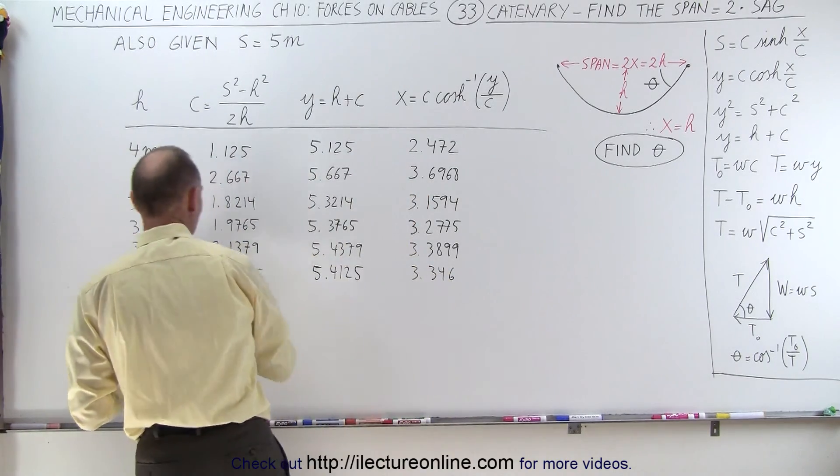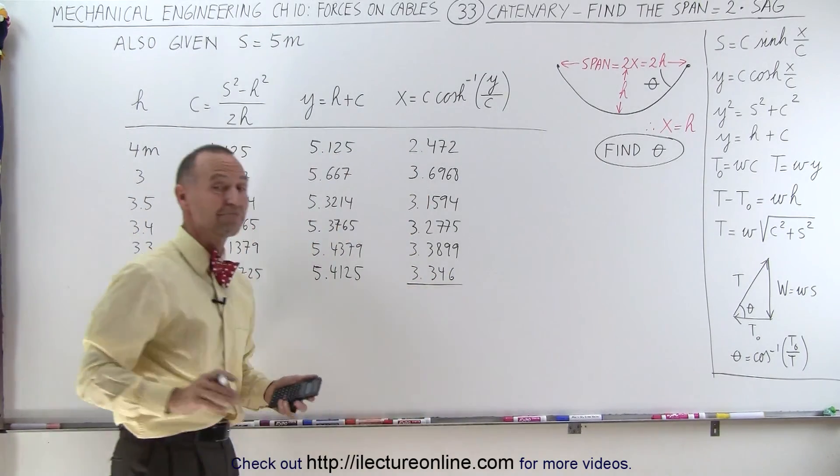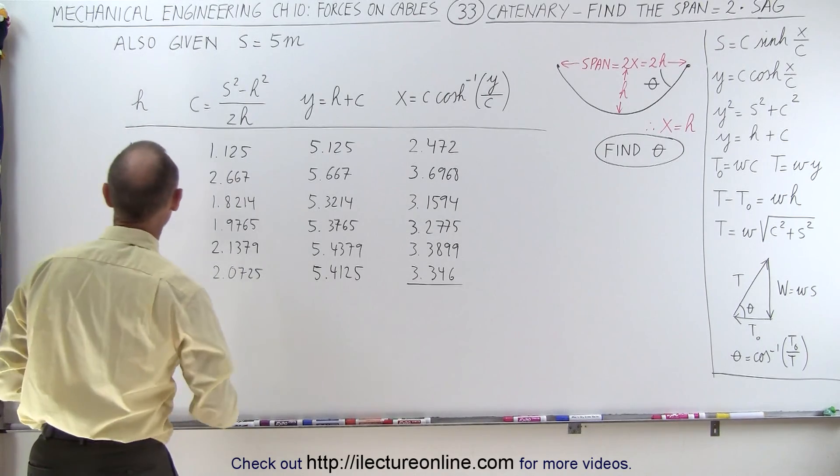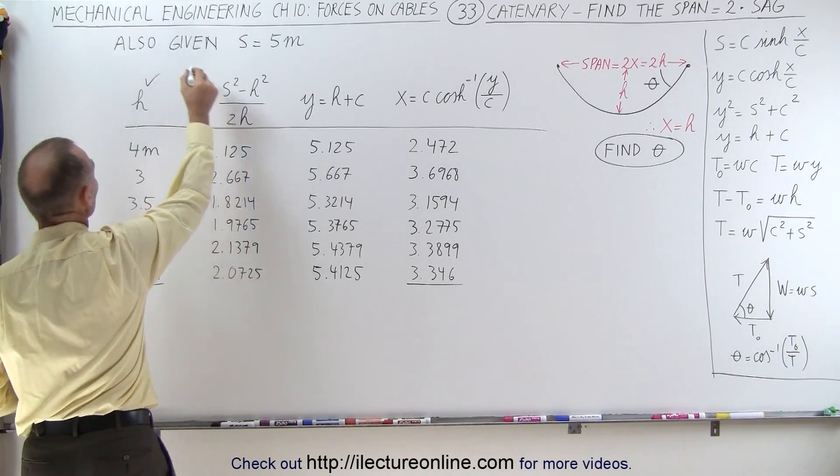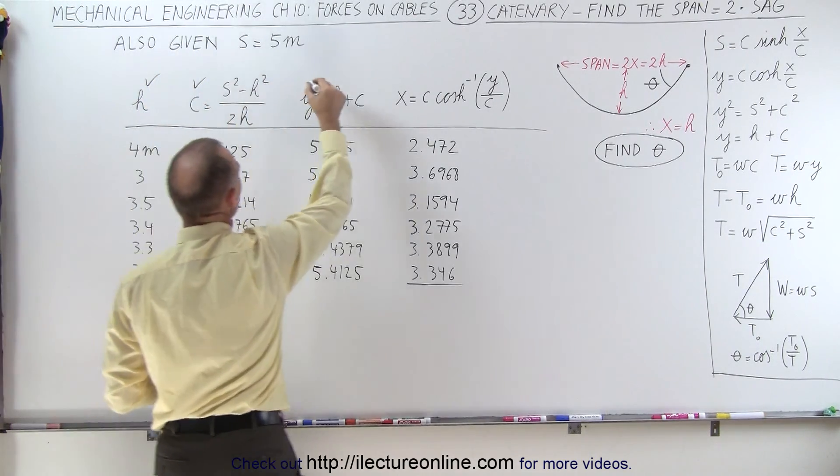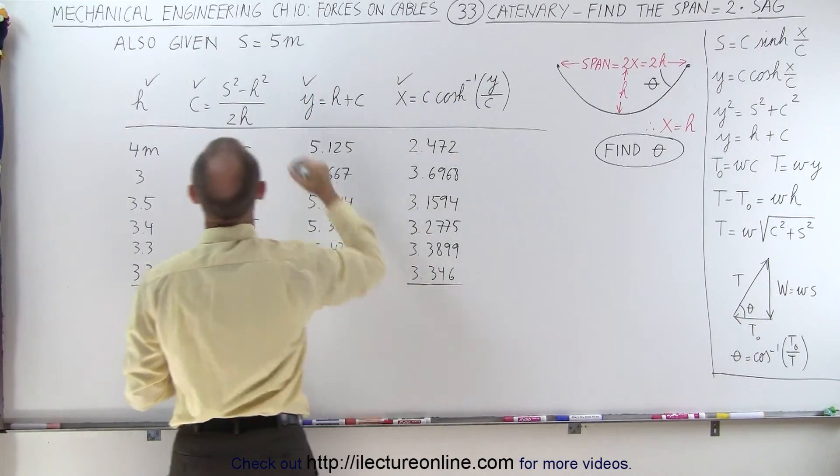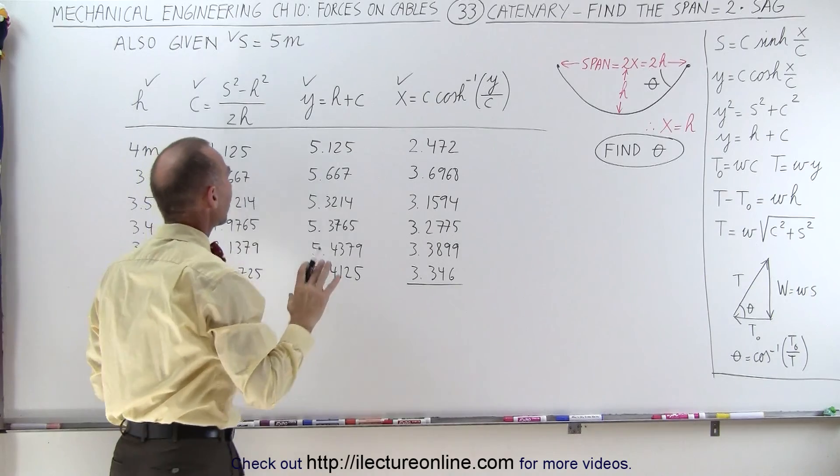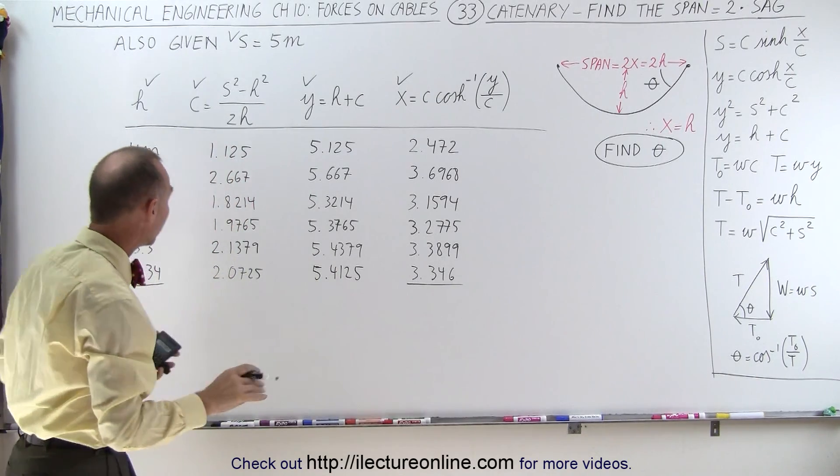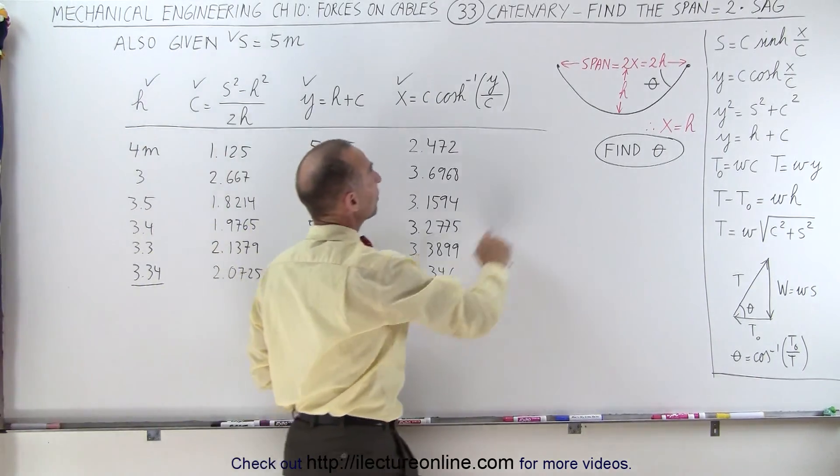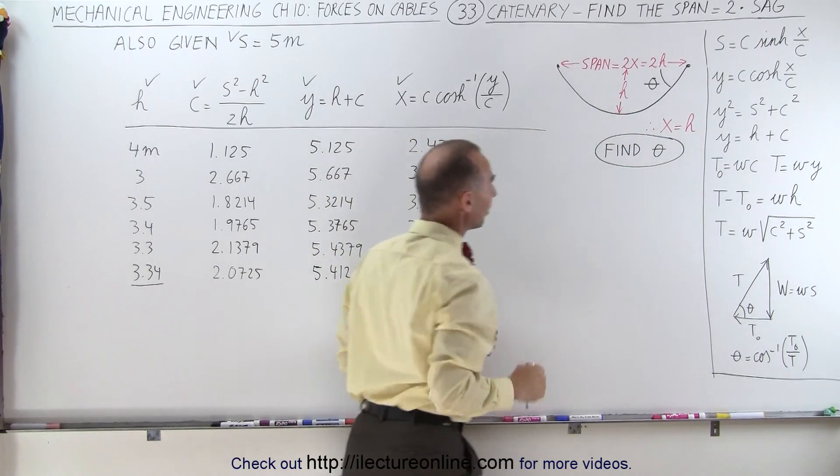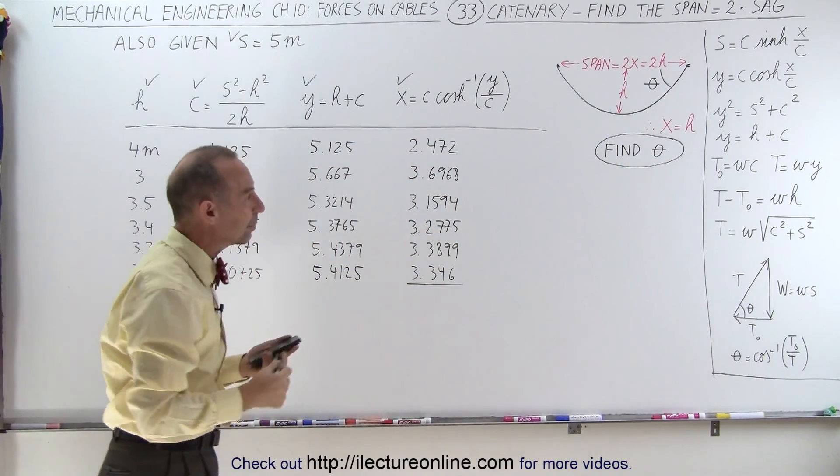Let's see here. 3.34, 3.346. Close enough. Which means we have h, we have c, we have y, and we have x. And we have s, meaning we have all five values in such a way that h equals x, which means the span will be twice the sag of the cable.